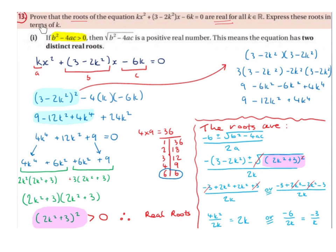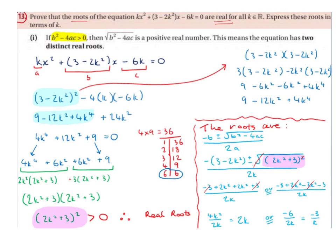Now we need to express the roots in terms of k using the quadratic formula: x = (-b ± √(b² - 4ac)) / 2a. We've already worked out b² - 4ac = (2k² + 3)², so we place that under the square root. We swap b for (3 - 2k²), so the numerator starts with -1×(3 - 2k²). The denominator is 2 times a = 2k.